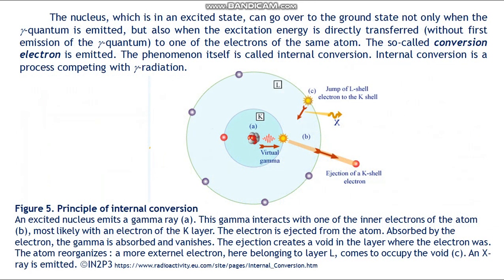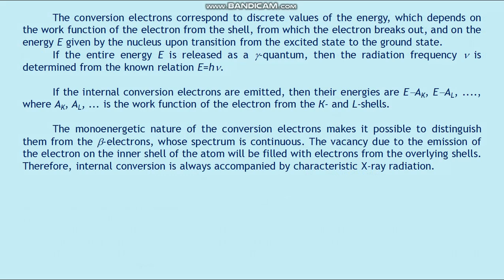The nucleus which is in an excited state can go to the ground state not only when a gamma quantum is emitted, but also when the excitation energy is directly transferred — without first emission of a gamma quantum — to one of the electrons of the same atom. The so-called conversion electron is emitted. The phenomenon itself is called internal conversion. Internal conversion is a process competing with gamma radiation. The conversion electrons correspond to discrete values of energy, which depends on the location of the electron in the shell from which it breaks out, and on the energy E given by the nucleus upon transition from the excited state to the ground state.